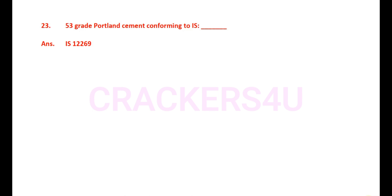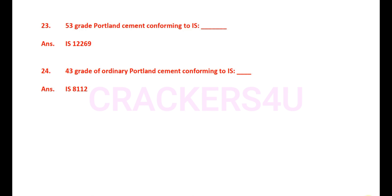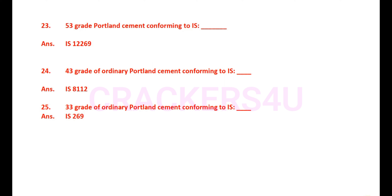Question 23: 53 grade Portland cement conforms to IS code — answer: IS 12269. Question 24: 43 grade ordinary Portland cement conforms to IS code — answer: IS 8112.